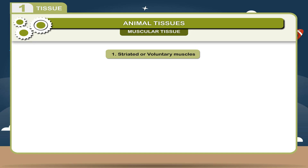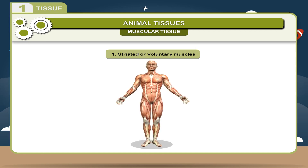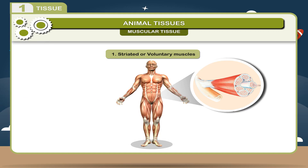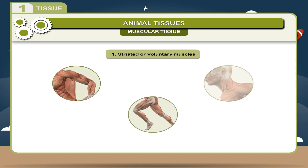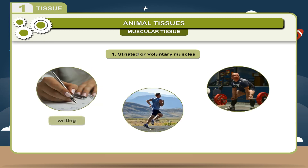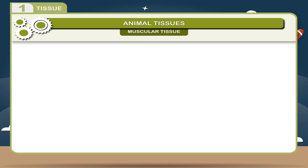1. Striated or voluntary muscles: These muscles are attached to the bones. They are composed of cylindrical fibers with transverse striations on them. These muscles are also called striated muscles. They are found in arms, legs, neck, etc. When required, they help in writing, running, and working, and are therefore also called voluntary muscles because they are under our control.